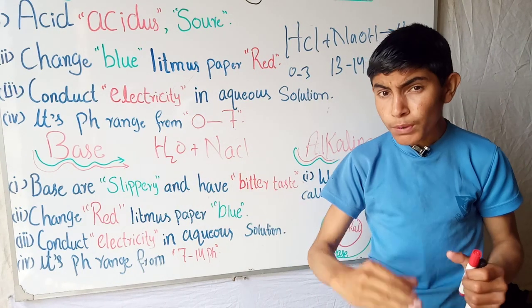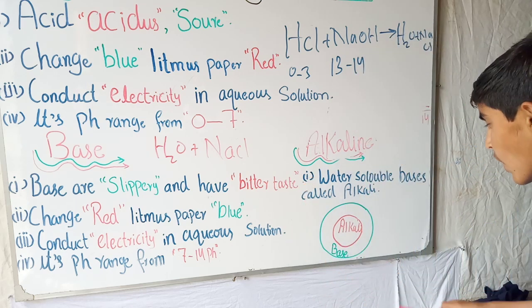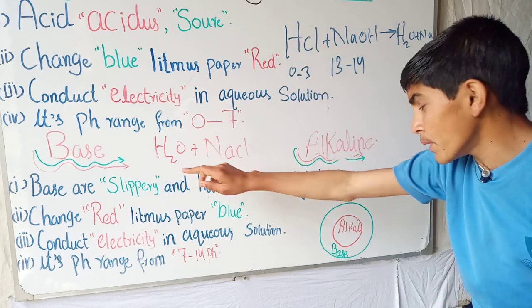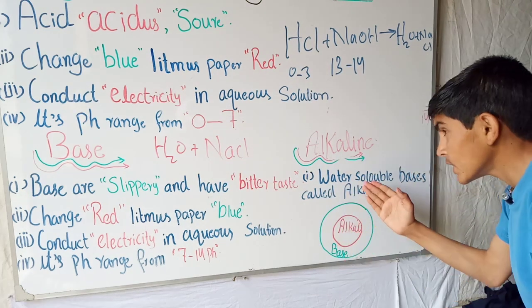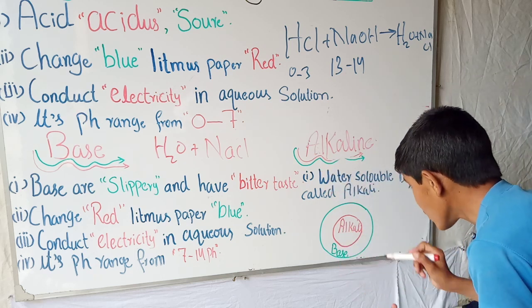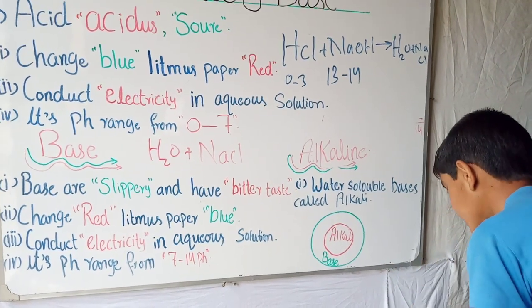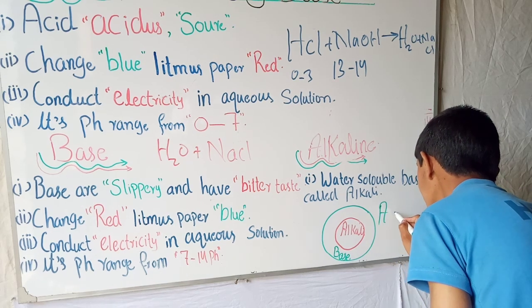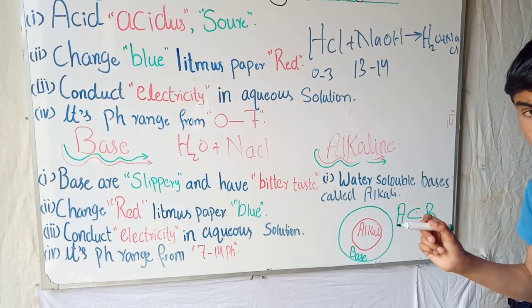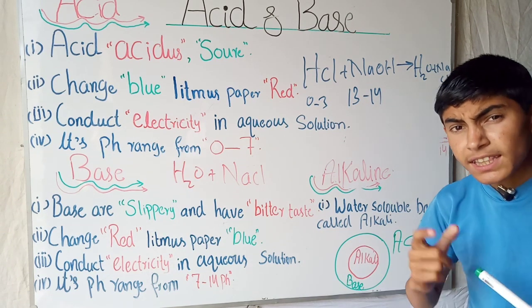Bases which are soluble in water are called alkalines. This is a Venn diagram of base and alkaline. We can say alkali is the subset of base. In mathematical language, alkali is the subset of base.